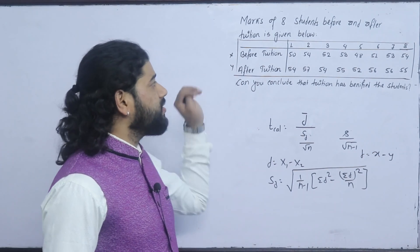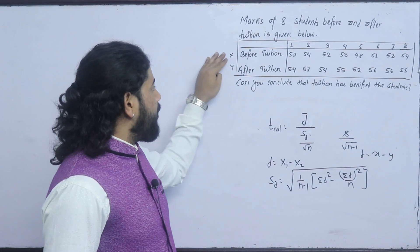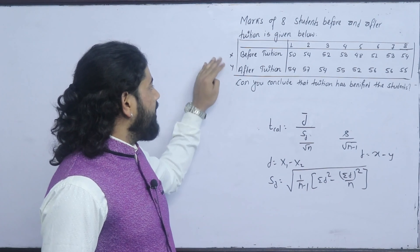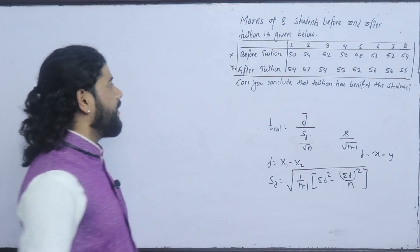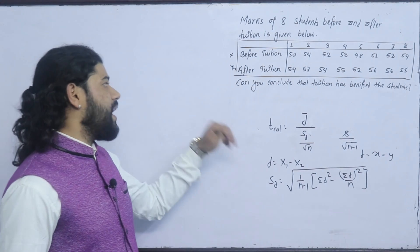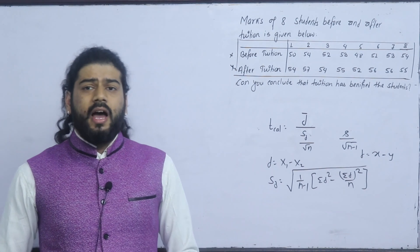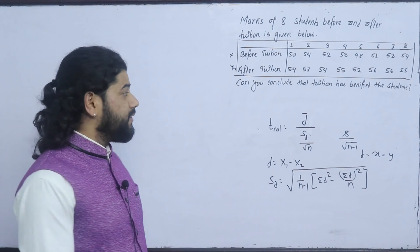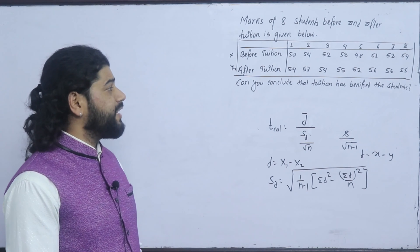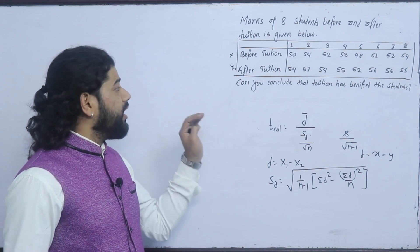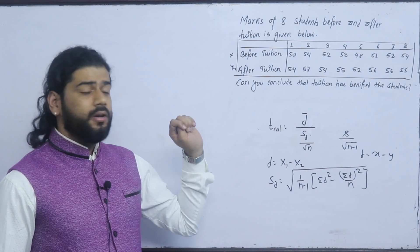Now the question is solved. Before tuition is x1, and after tuition is x2. In the hypothesis set, null hypothesis means no change — or tuition has not benefited the student.